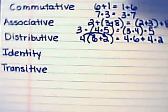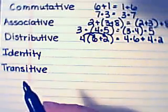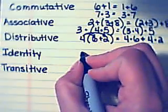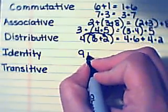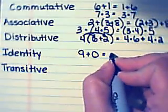The next property I'm going to show you is the identity property. And for adding, basically it means if you take any number and add 0, you're going to get that number.